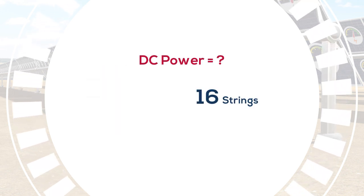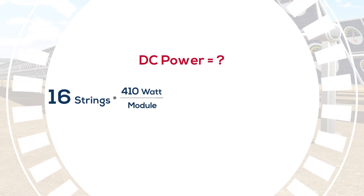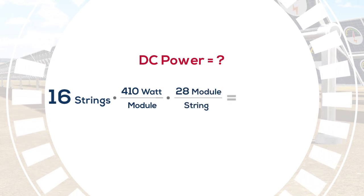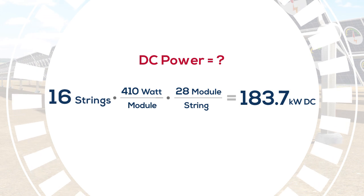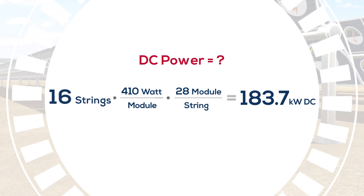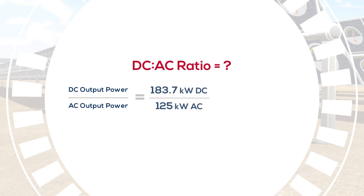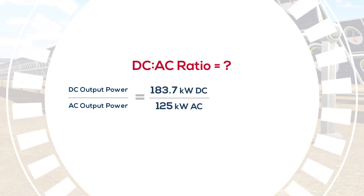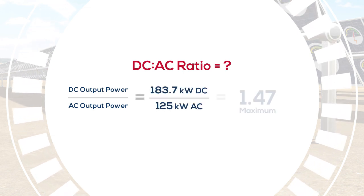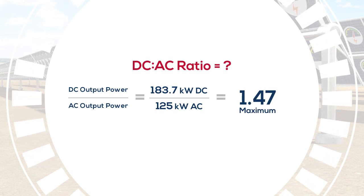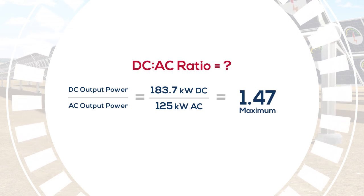The DC power is 16 strings times 410 watts per module times 28 modules per string, which yields 183.7 kilowatts DC. The maximum DC to AC ratio is then 183.7 kilowatts divided by 125 kilowatts, which yields 1.47. This gives you lots of room to optimize your project.